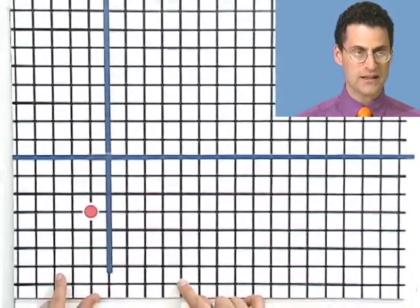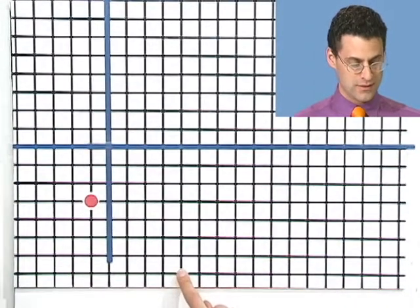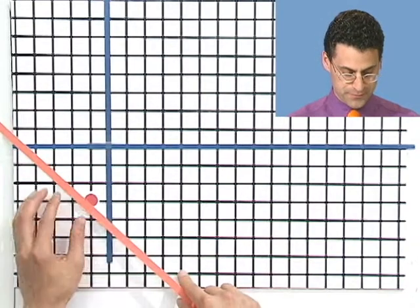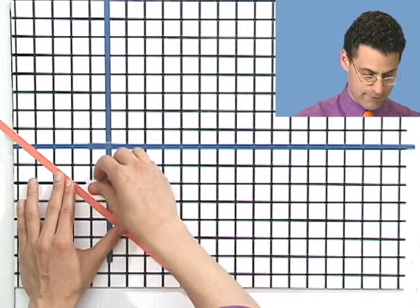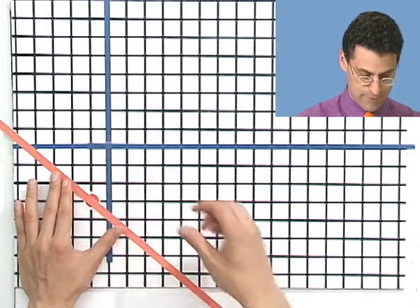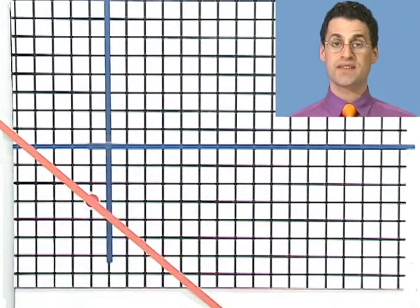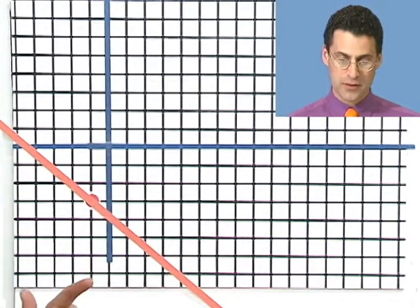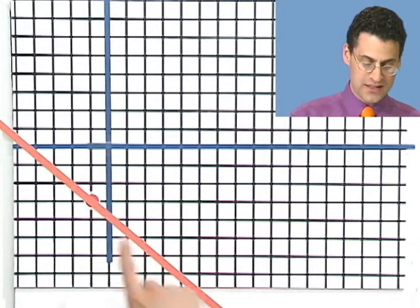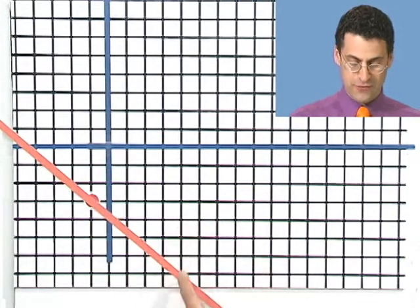You still might not be able to see that. There it is. And if you can now connect that point with our given point, there is the exact line, the exact line that passes through the point minus one, minus three, and has slope minus four over five. Because I went five in a positive direction and four down.